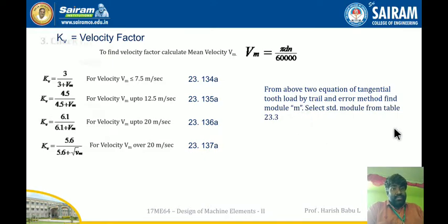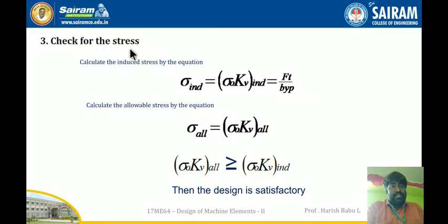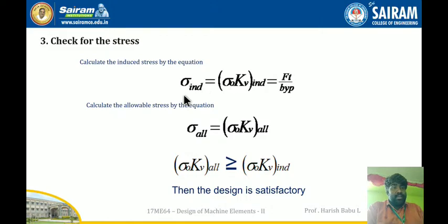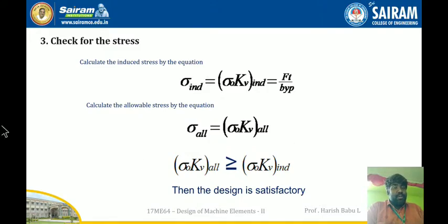Once the module m is fixed, check for stresses. Calculate the induced stress using: σ_induced = Ft / (b × y × p), where if the gear is the weaker member, use b × y2 × p. Then calculate the allowable stress: σ_allowable × kv. If σ_allowable is greater than or equal to σ_induced, then the design is satisfactory and the assumed module m is accepted as the standard value.